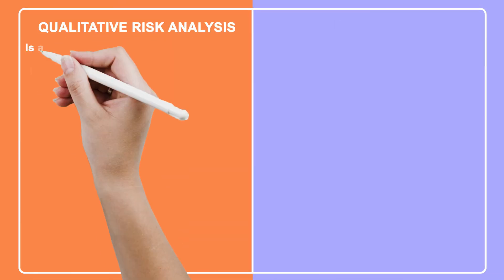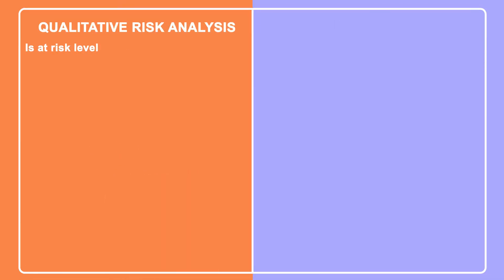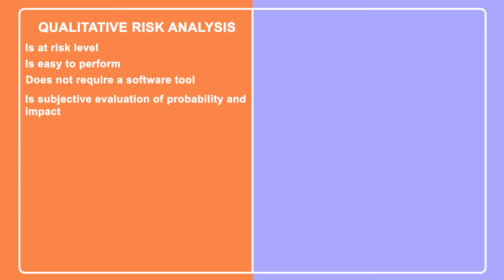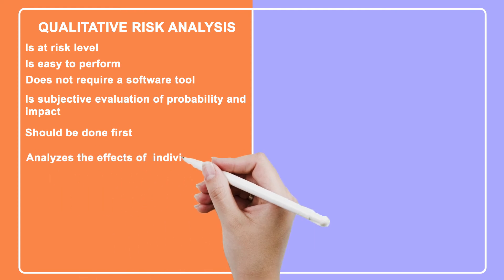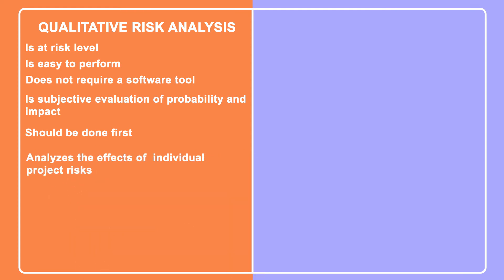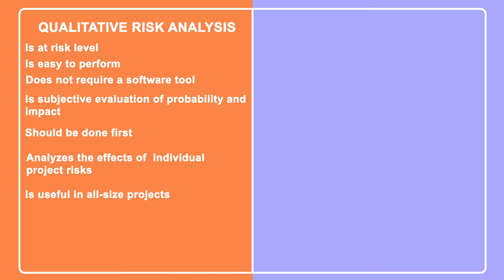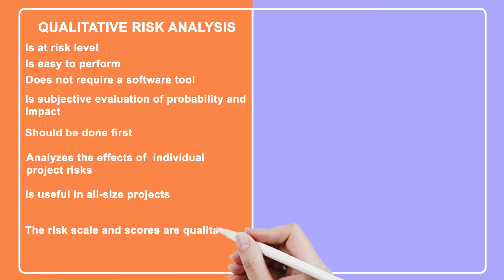Qualitative risk analysis: is at risk level, is easy to perform, does not require a software tool, is a subjective evaluation of probability and impact, should be done first, and analyzes the effects of individual project risks. It is useful in all size projects, and the risk scale and scores are qualitative.